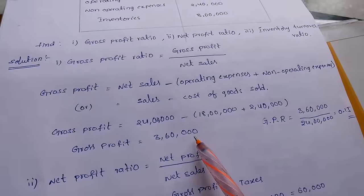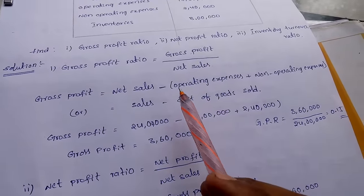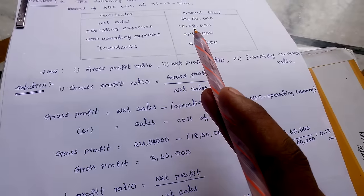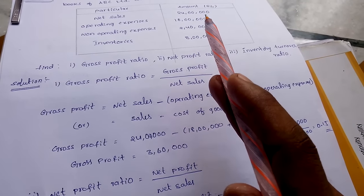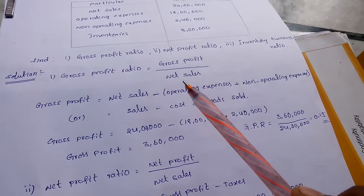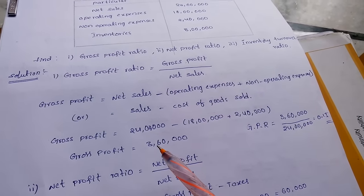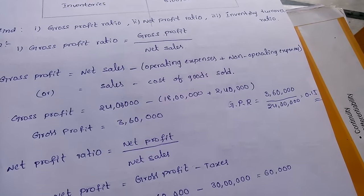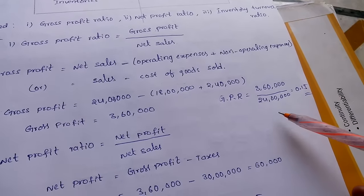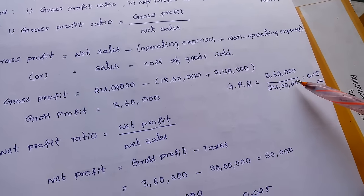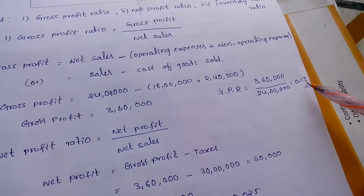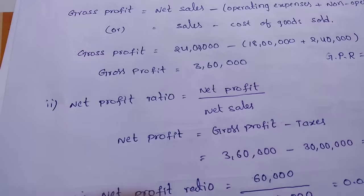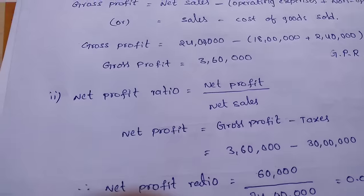Gross profit is 3 lakhs 60,000 and net sales given in the problem is 24 lakhs. Simplifying gross profit divided by net sales — that is 3 lakhs 60,000 divided by 24 lakhs — we get 0.15. This is the gross profit ratio.